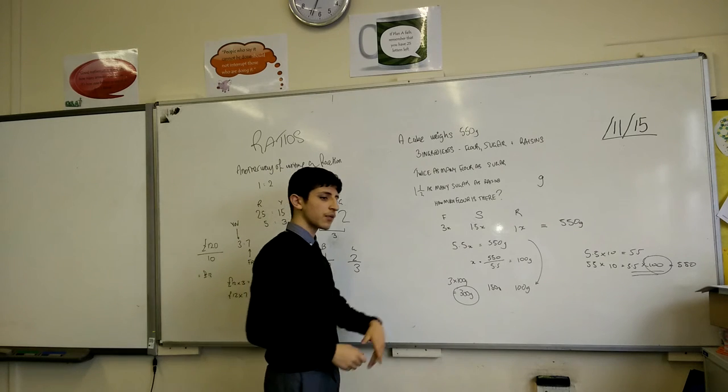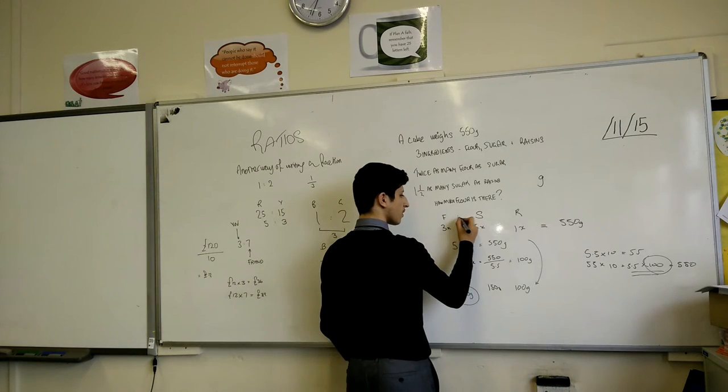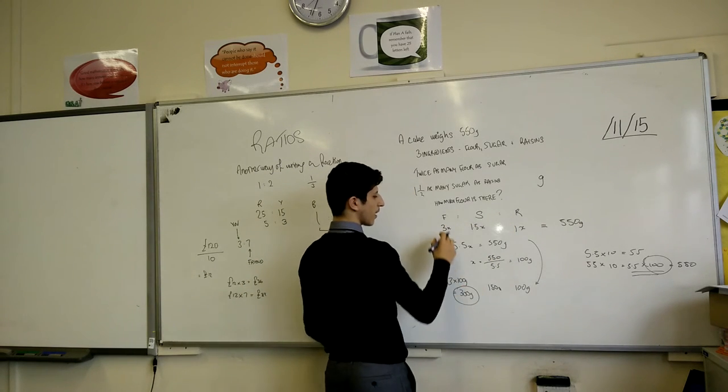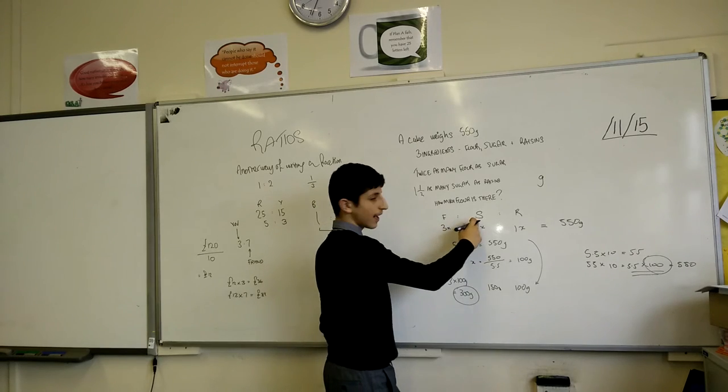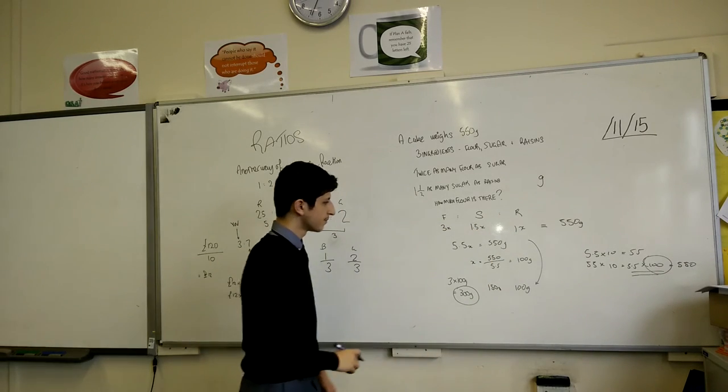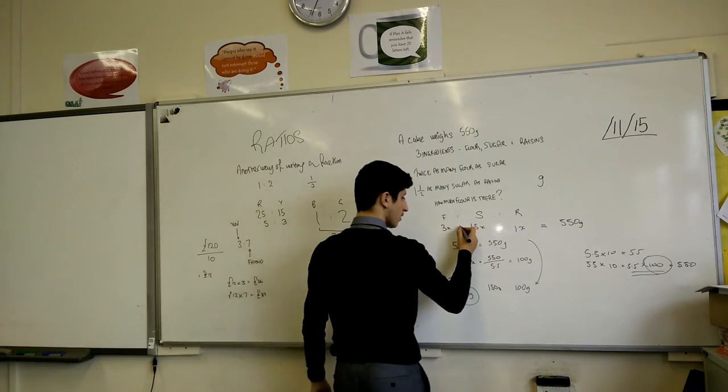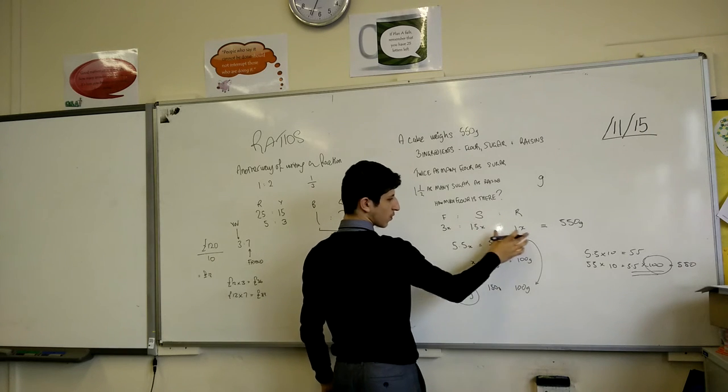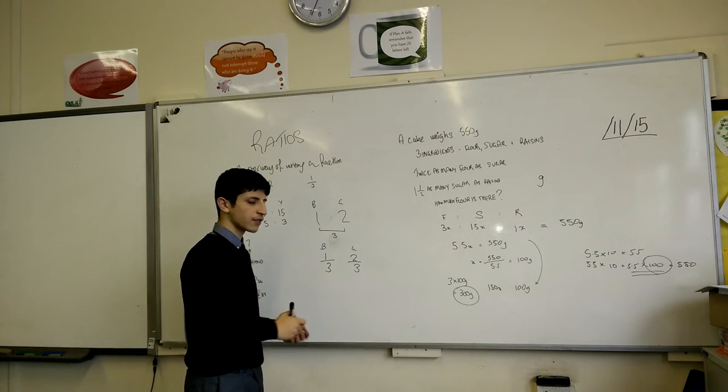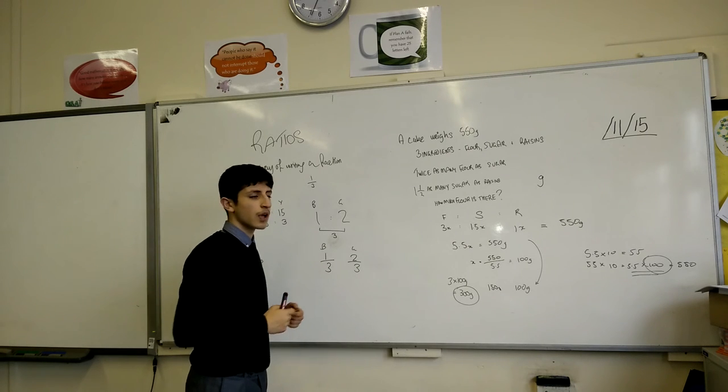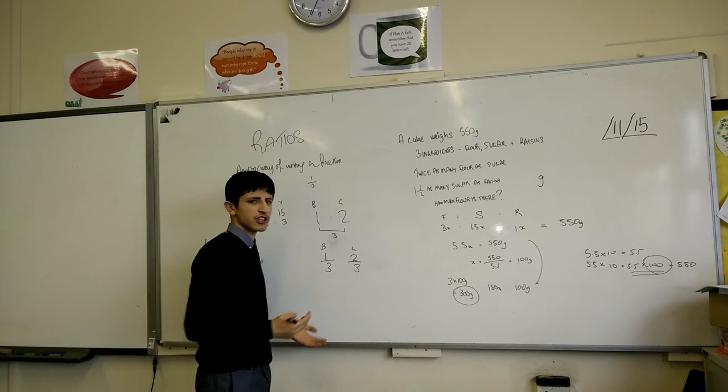When you write this question out in your working, you have to put the colons here. F has a ratio to S, and that has a ratio to R. Likewise, underneath, these values are also ratios. Colons are very important. If you don't write the colons, you will lose the mark. Because you're not showing where the ratio is.